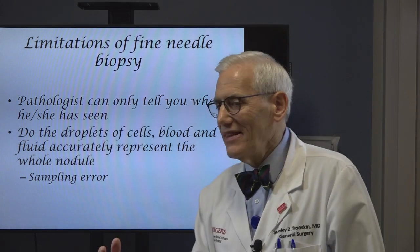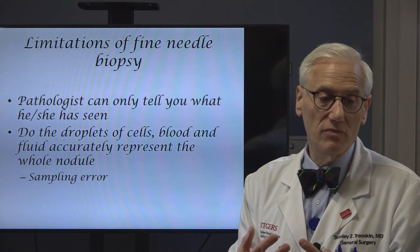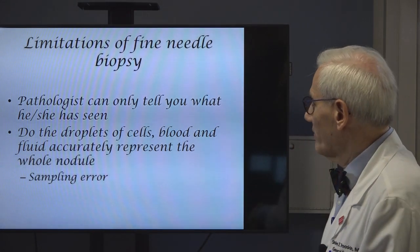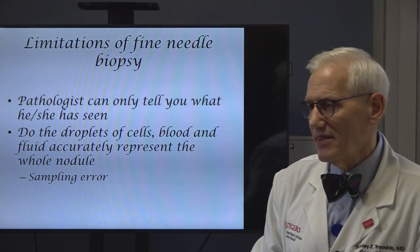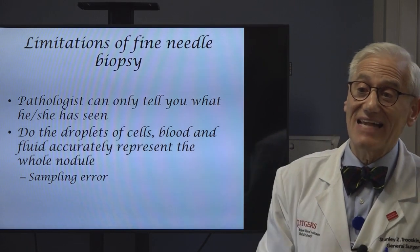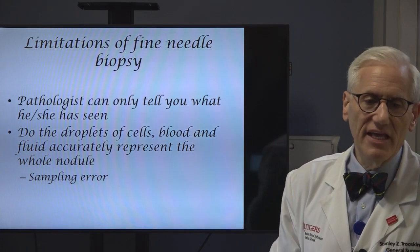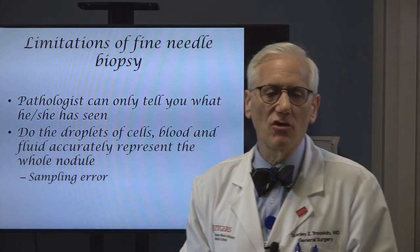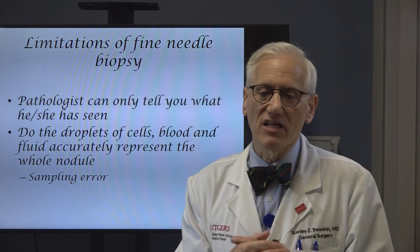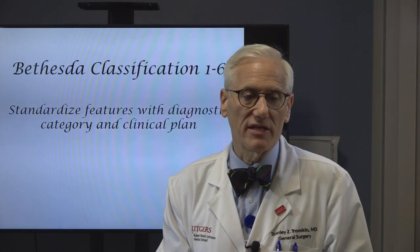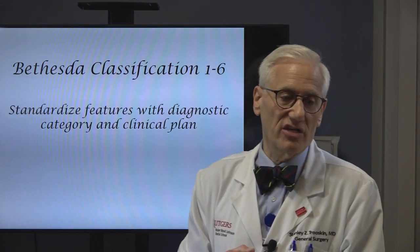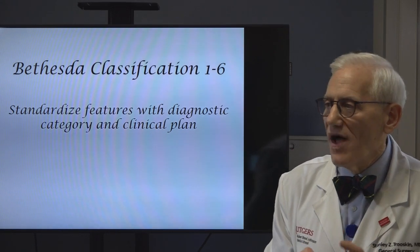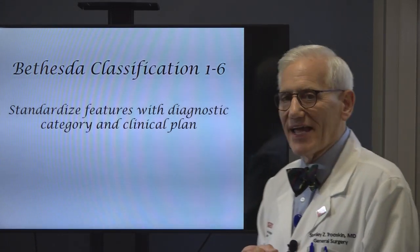Historically there was an issue of what diagnosis went with what needle biopsy. Pathologists would describe what they'd see and put a diagnosis on it, while another pathologist would see the exact same thing and put a different diagnosis. That was not very helpful — it just led to a lot of opinions with disagreement. Because that was a major problem 10 years ago, the world's foremost thyroid pathologists got together in Bethesda, Maryland, and created the Bethesda classification to standardize what features went with which diagnostic category and what that meant clinically.